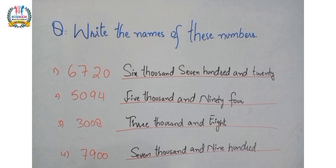Next part of this question: 5094. Here five has place value thousands, zero has place value hundreds, nine has place value tens, and four has place value ones. So we can write these numbers in words: five thousand and ninety-four.